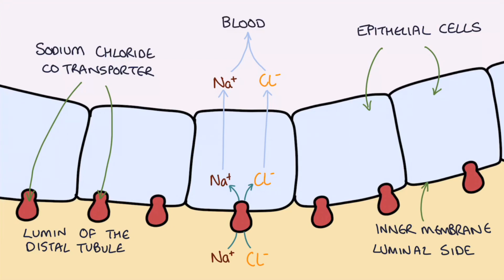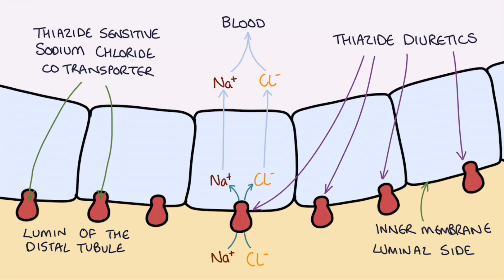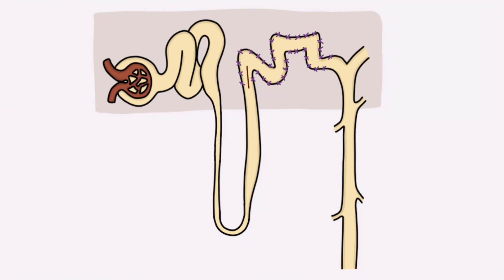This co-transporter molecule is called a thiazide-sensitive sodium chloride co-transporter, and it's the target of thiazide diuretics. Thiazide diuretics block this co-transporter, which blocks the reabsorption of sodium and chloride from the filtrate into the blood. This means that more sodium and chloride is excreted in the filtrate and into the urine.